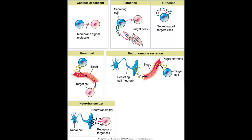Contact-dependent communication means two cells are actually touching each other and communicate because they are in contact — like in the heart, where one heart cell communicates electrical energy to the next so they both contract. Paracrine communication involves a secreting cell that secretes hormones to activate target cells adjacent to that secreting cell — 'para' meaning next to.